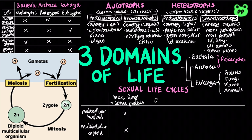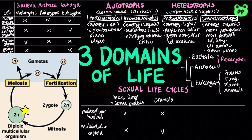In animals, meiosis produces gametes, which undergo no further cell division before fertilization. Gametes are the only haploid cells in animals. Gametes fuse to form a diploid zygote that divides by mitosis to develop into a multicellular diploid organism.